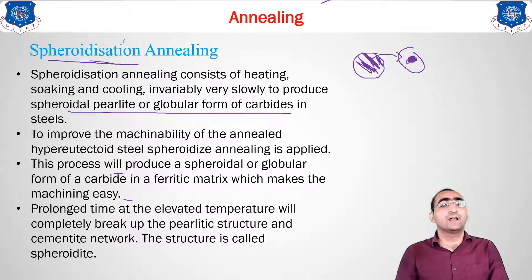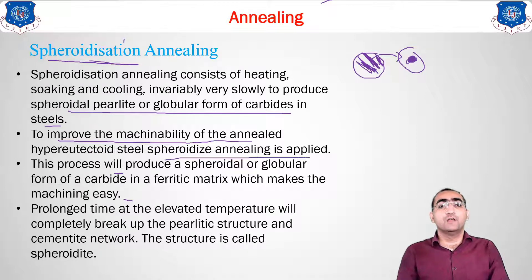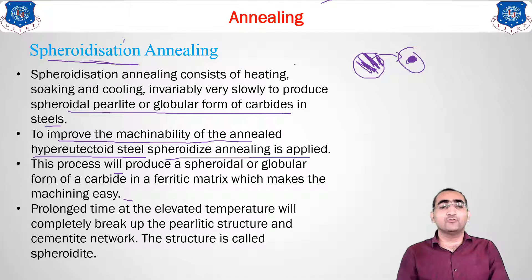Here you can see spheroidal pearlite, or the globular form of carbide in the steel. By getting the spheres, what is the improvement? The improvement of machinability is maximum in this type of steel. Spheroidizing annealing is applied to hypereutectoid steel. As we saw previously, recrystallization or process annealing was used for hypoeutectoid steel. But in hypereutectoid steel, cementite is more, so for converting that cementite and pearlite into spheres, we use spheroidizing annealing.